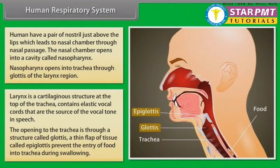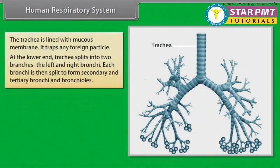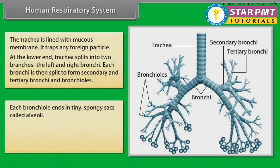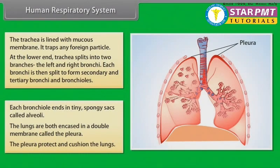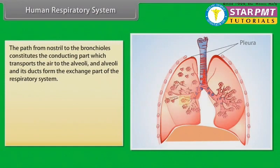During swallowing, the trachea is lined with mucous membrane which traps any foreign particles. At the lower end, the trachea splits into two branches, the left and right bronchi. Each bronchi is then split to form secondary and tertiary bronchi and bronchioles. Each bronchiole ends in tiny spongy sacs called alveoli. The lungs are both encased in a double membrane called the pleura, which protects and cushions the lungs.